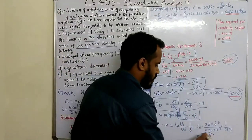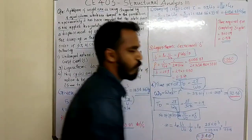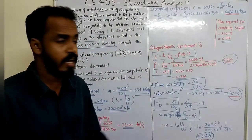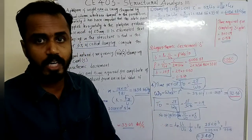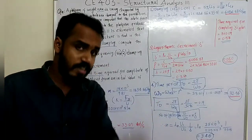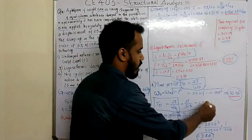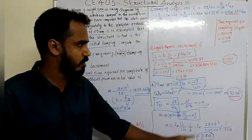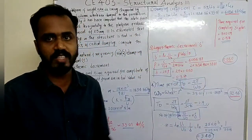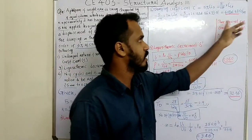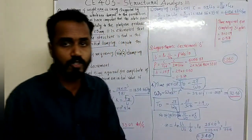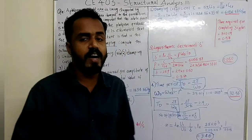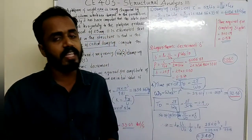The number of cycles is 3.46. For completing 3 cycles, the time required is 3 into 0.19, which is equal to 0.57 seconds.